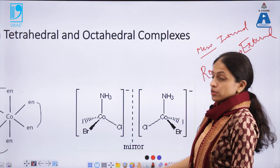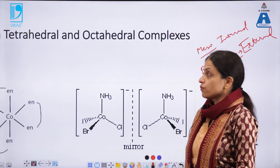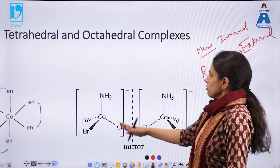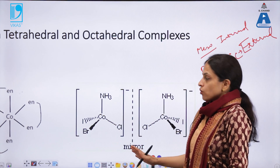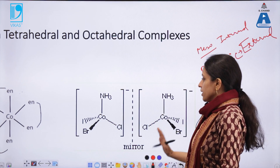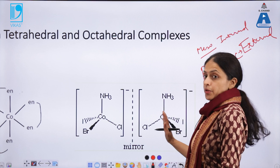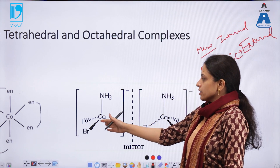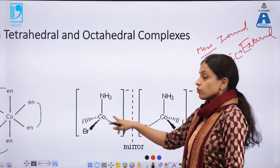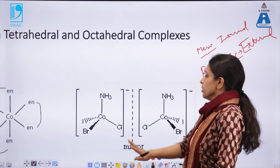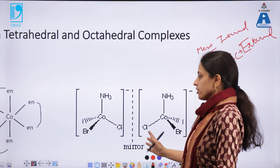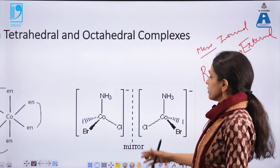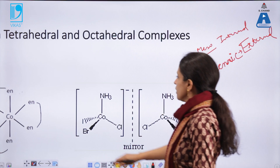Coming back to the stereochemistry of transition metal complexes: this tetrahedral complex of cobalt is optically active because it can form a mirror image that is non-superimposable. Cobalt, being the central atom, has four different groups attached to it, with no element of symmetry. Therefore it is a chiral compound and is optically active.